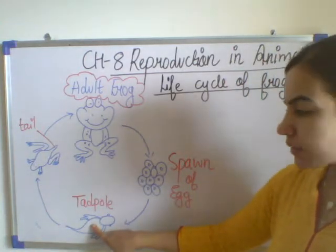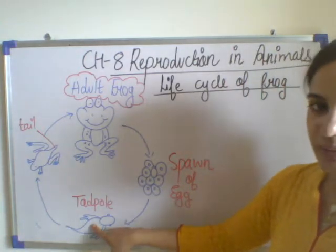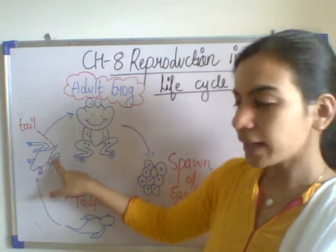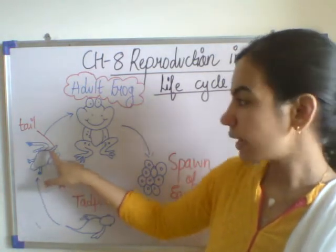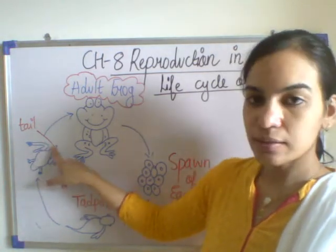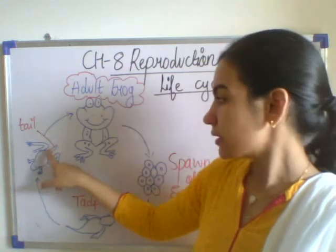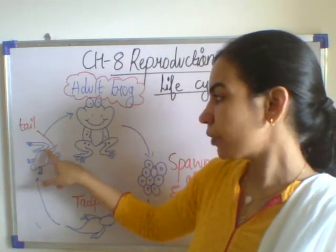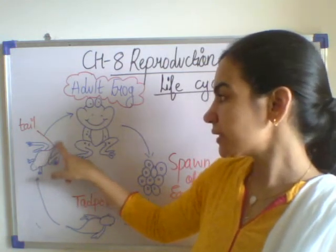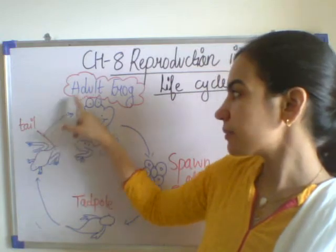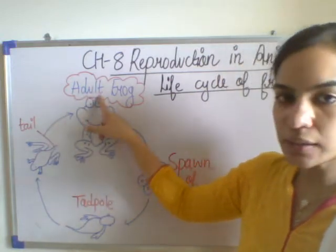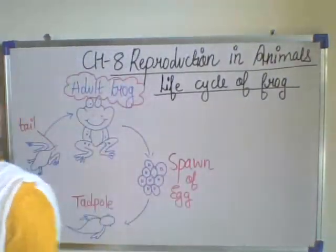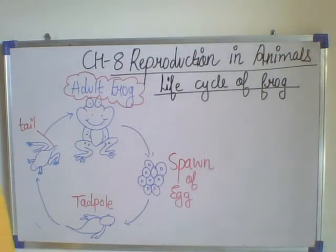Then the tadpole grows in size. It develops its hands, legs, and tail. Then slowly the tadpole loses its tail and becomes an adult frog.